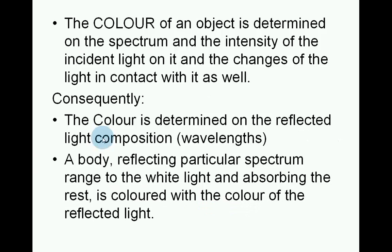The colour of an object is determined by the spectrum and the intensity of the incident light on it, and the changes of the light in contact with it as well. Consequently, colour is determined by the reflected light composition — its wavelengths. A body reflecting a particular spectrum range from white light and absorbing the rest is coloured with the colour of the reflected light.